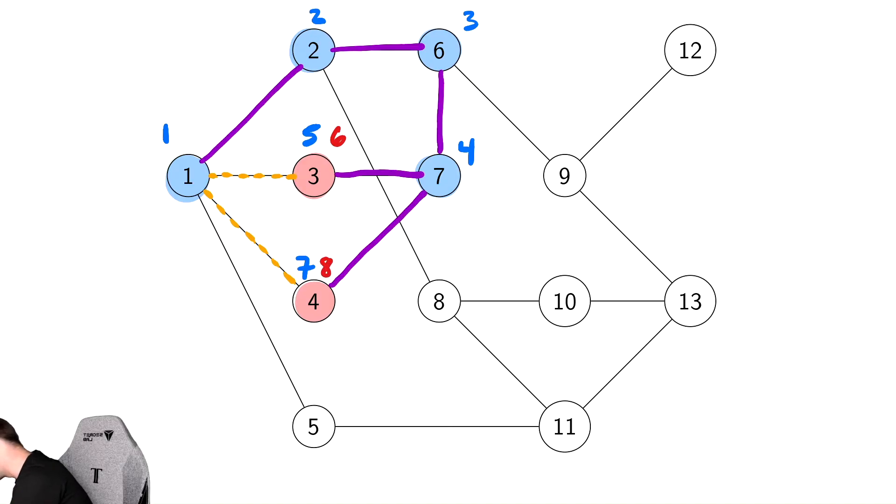And then we go back to 7. There's nowhere new to go from 7, so we are now also done with 7. So that gets a finishing time of 9. We go up to 6, and there is somewhere new to go from 6. We can go to 9. So we go to 9. From 9, we can go to 12. So we go to 12. Let's highlight that.